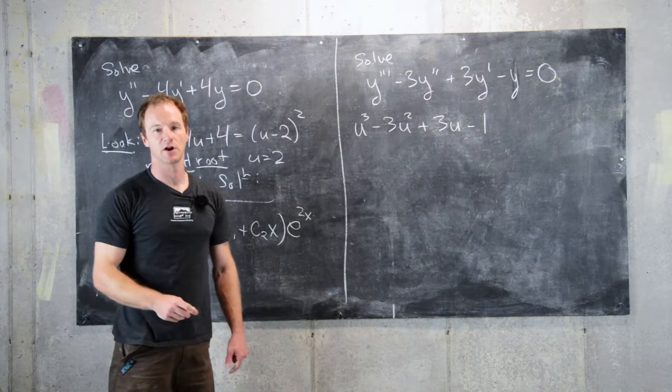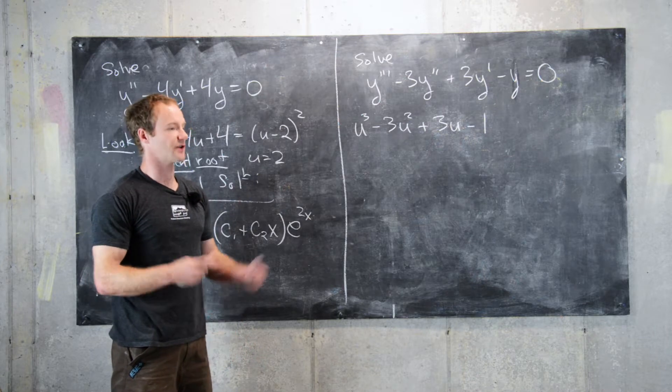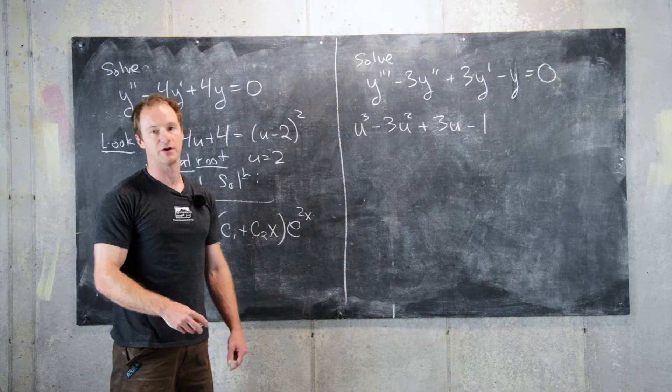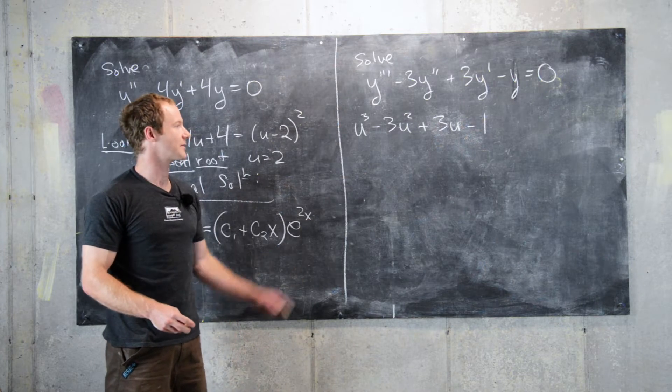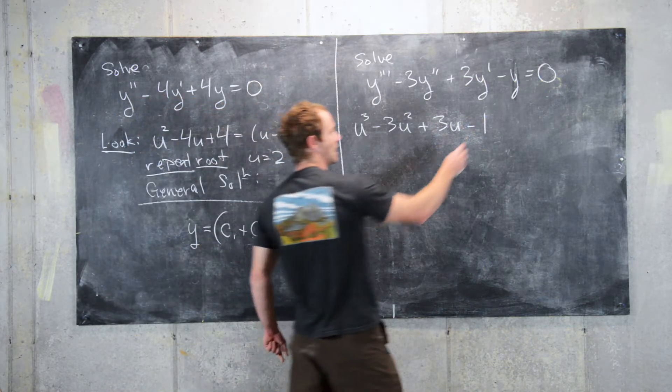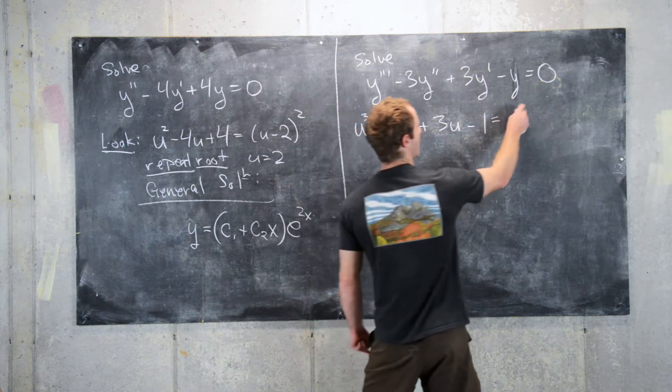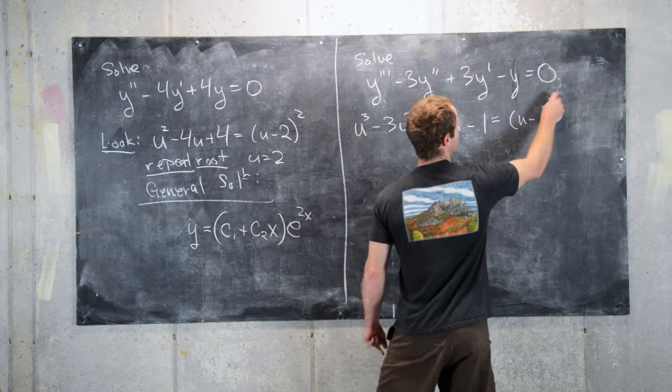Now this one's a little bit trickier to factor, so I have an example video of factoring a cubic polynomial for this application that you can look up. But, it's not so hard to see that this is u minus 1 cubed.